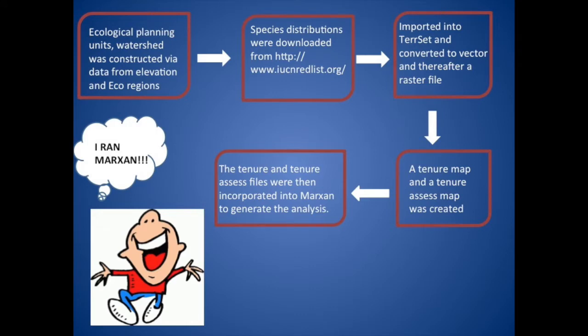Thereafter, for the ecological planning units, a watershed was constructed using data that consisted of elevation, water and ecoregions. The hexagon and ecological planning units were then imported into Tercet. Once that was completed, the species distributions were then downloaded from www.iucnredlist.org.